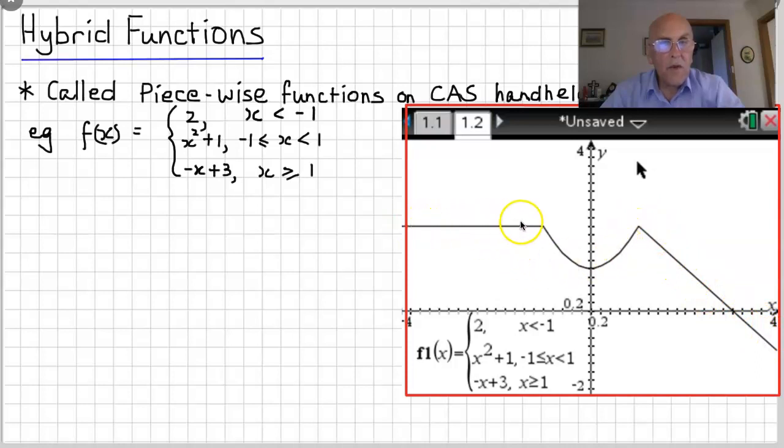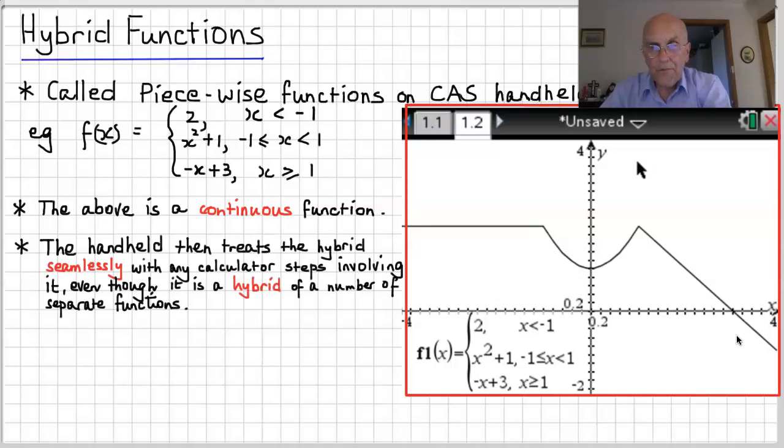So this is the first bit, the x equals 2, this is the x squared plus 1 bit, and this is the minus x plus 3 bit. Okay, if you were to do that on your CAS calculator, this is a continuous function. Now, the good news for you is that the handheld then treats the hybrid seamlessly with any calculator steps involving it, even though it is a hybrid of a number of separate functions pieced together. The calculator will work it out.